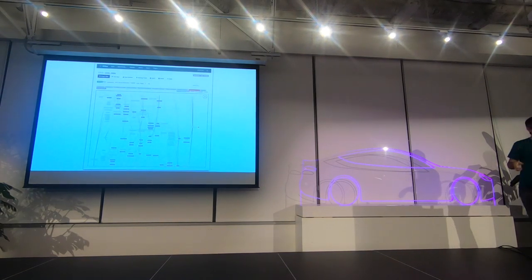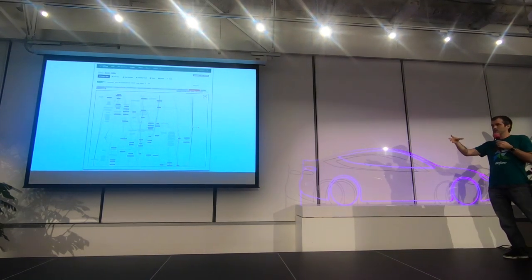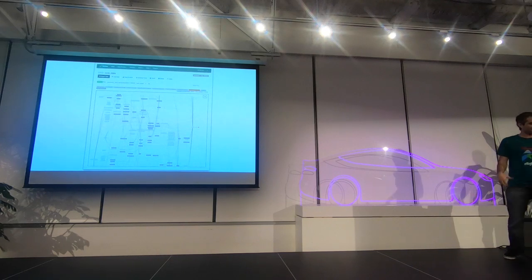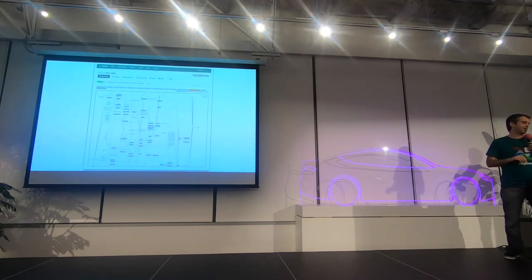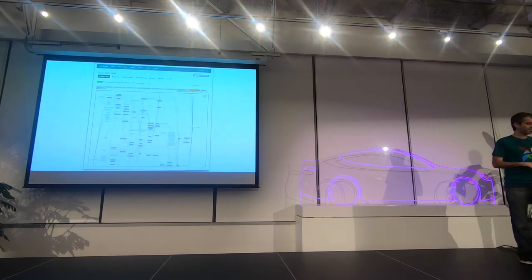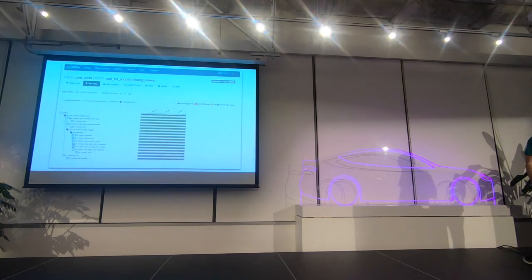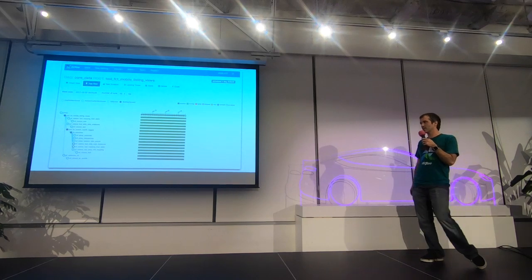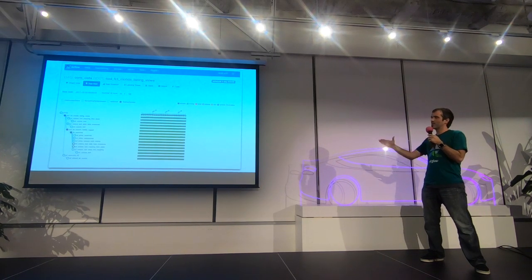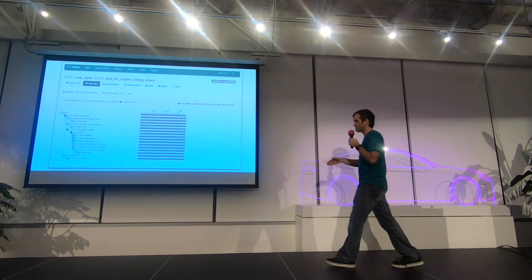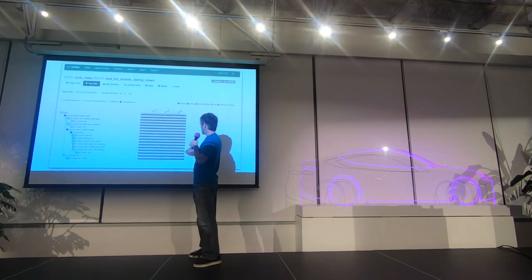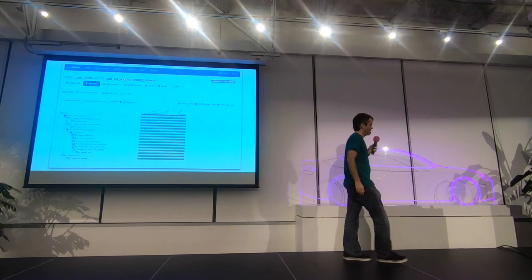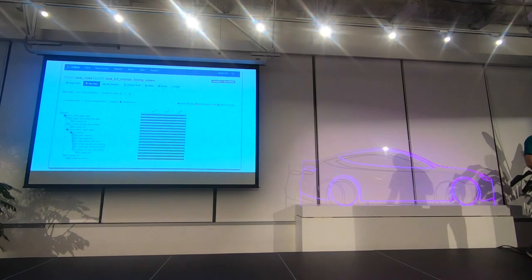This is what the Airflow UI looks like — the graph view. You're able to visualize all the dependencies between your tasks, what has failed, what is running, what is successful. From here you have access to your logs and all sorts of context about your tasks and workflow. This is the tree view — a tree representation of the same graph. Since we lay it out this way, we're able to see all the different runs. The latest run is shown here; everything is green because everything succeeded. And then you see the previous runs.